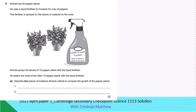Question 9. Ahmed has 20 pepper plants. He uses a liquid fertilizer to increase his crop of pepper. This fertilizer is sprayed on the leaves or watered on the roots. Ahmed sprays the leaves of 10 pepper plants with the liquid fertilizer. He waters the roots of the other 10 pepper plants with the liquid fertilizer.